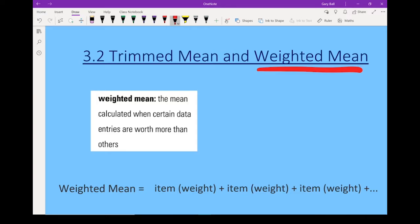So the formula for a weighted mean is to calculate your weighted mean, you take the item times its weight, plus the next item times its weight, plus the next item times its weight, and so on and so on.